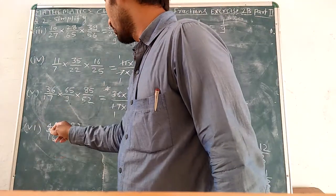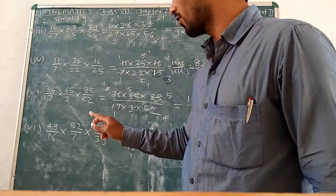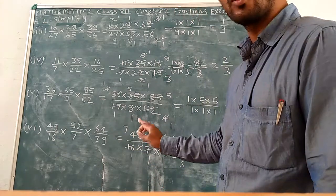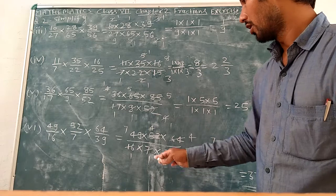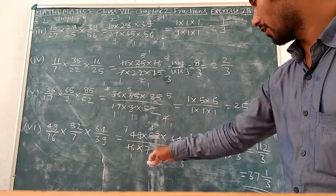49 upon 16 multiply 52 upon 7 multiply 64 upon 39 is equal to product of numerator 49 multiply 52 multiply 64 upon 16 multiply 7 multiply 13, product of denominator.